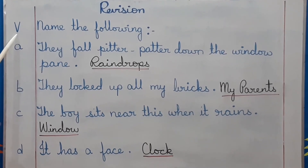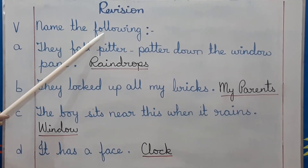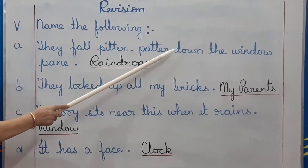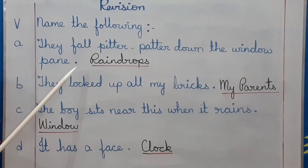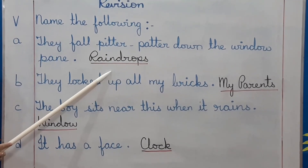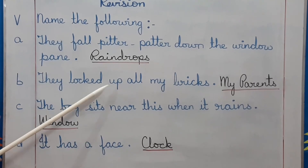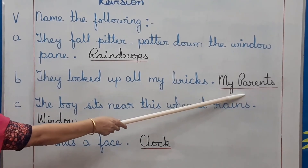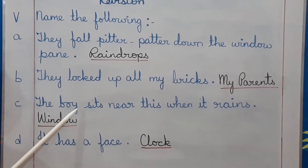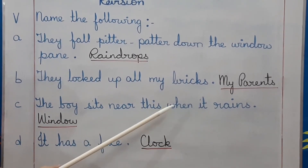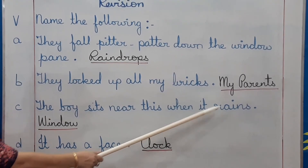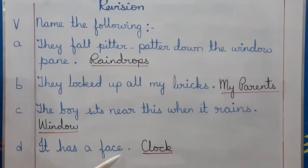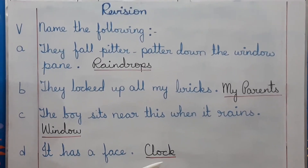Topic number five: name the following. A. They fall pitter-patter down the window pane — Raindrops. B. They locked up all my bricks — My parents. C. The boy sits near this when it rains — Window. D. It has a face — Clock.